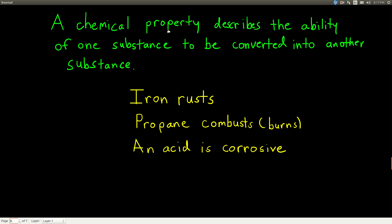See, that's the difference between chemical and physical. A chemical property describes something changing into something else, whereas in a physical property, it changes, but its identity doesn't change. It's still the same stuff before and after.